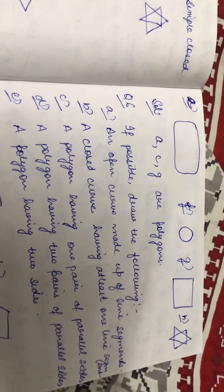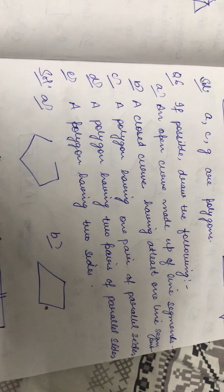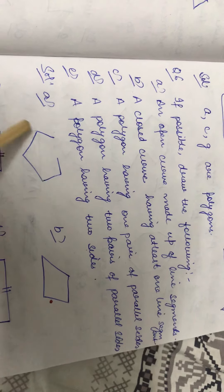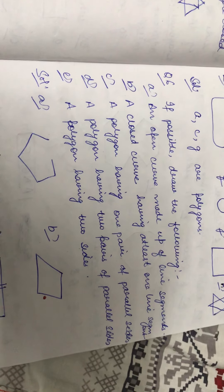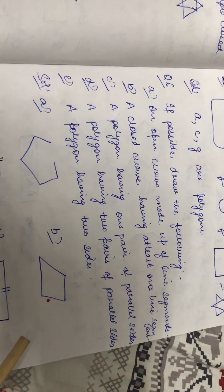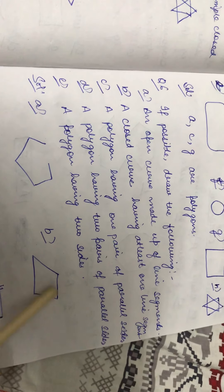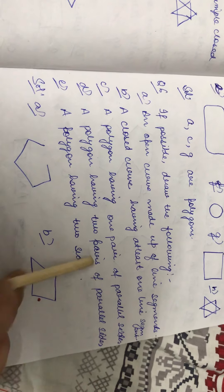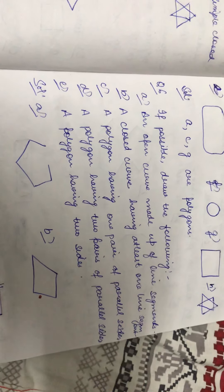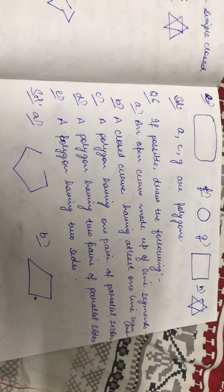Next question is: if possible, draw the following. An open curve made up of line segments — we can draw any open curve with any number of line segments. Next, B part: a closed curve having at least one line segment. At least means minimum one line segment; it can be 2, 3, 4, 5, or any number of line segments. So I have drawn a quadrilateral like this.